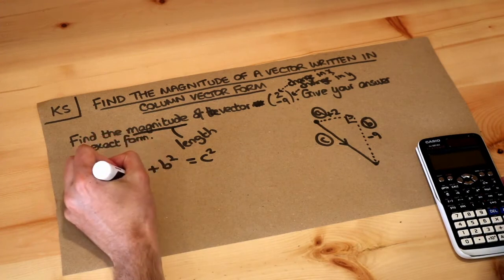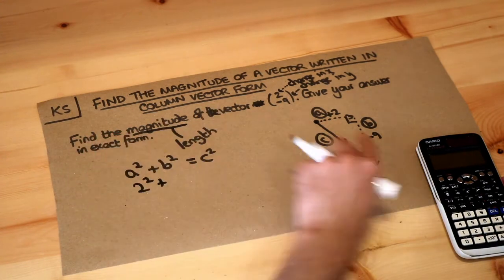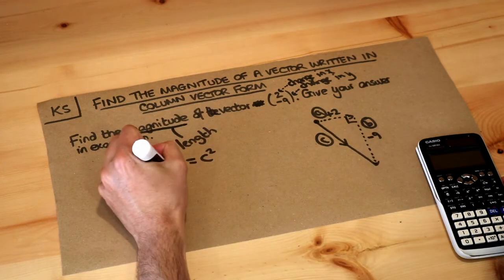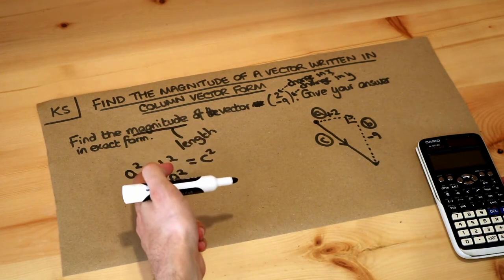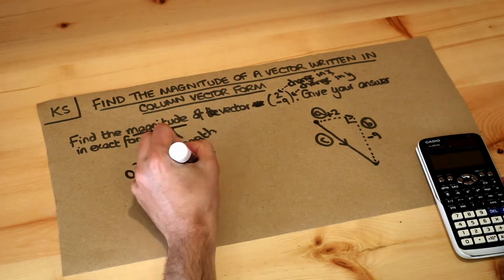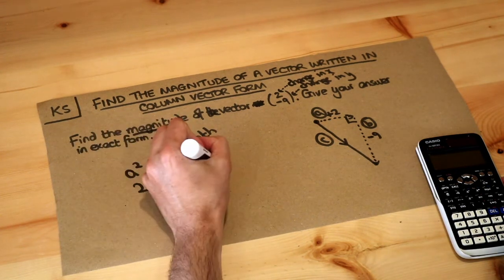Then I can just do 2 squared plus, and I can treat this as a positive length because lengths are positive, 9 squared. But even if you write minus 9 all squared, remember negative squared becomes positive so it doesn't actually matter, and that gives you c squared.